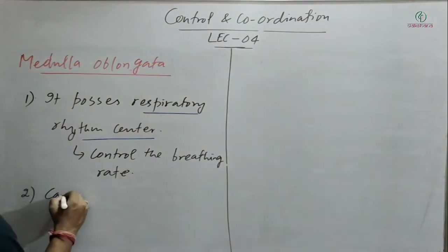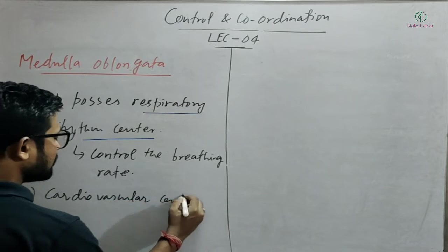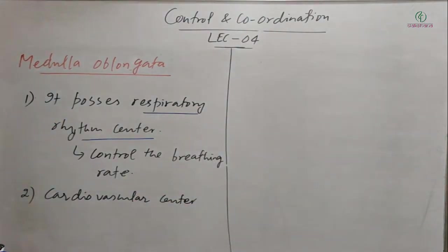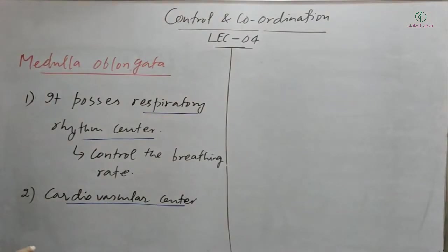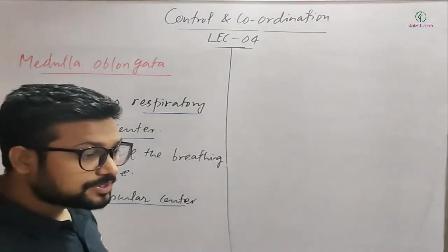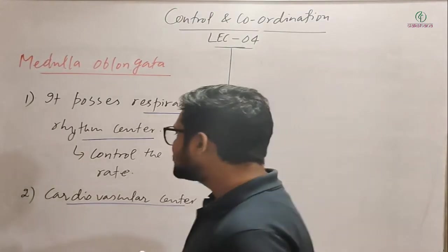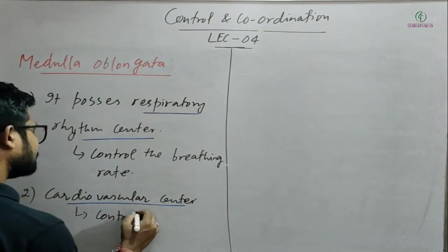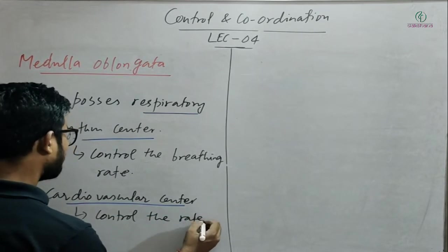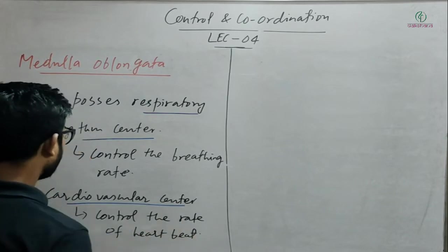The second center in medulla oblongata is the cardiovascular center. The role of the cardiovascular center is to control the heartbeat — to increase or decrease the heartbeat. So controlling the rate of heartbeat is the primary role of the cardiovascular center.